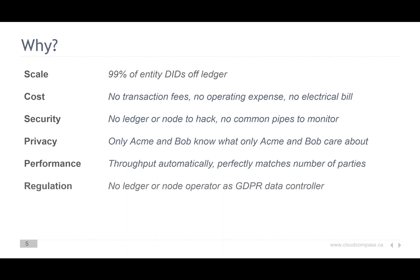Finally, from a regulation point of view, some consider a DID to be a piece of private data — a private identifier for a person. So there's no regulation issue if there's no DID put on a ledger for Bob.